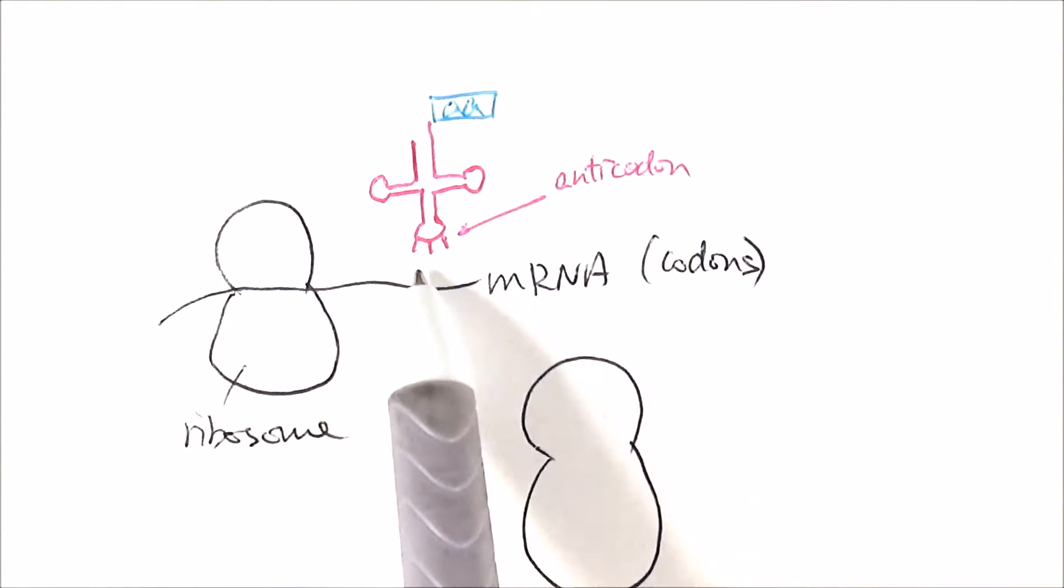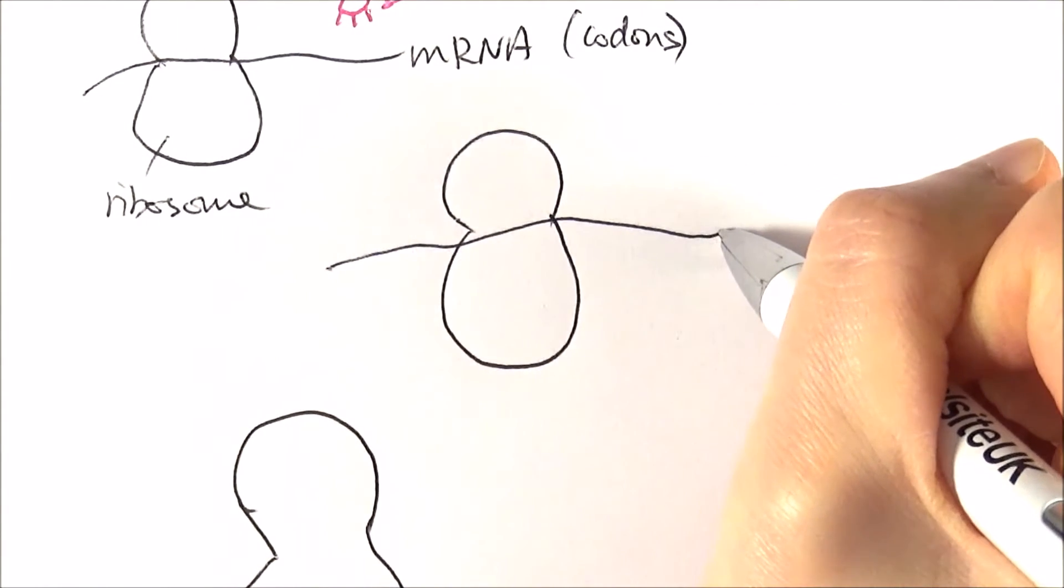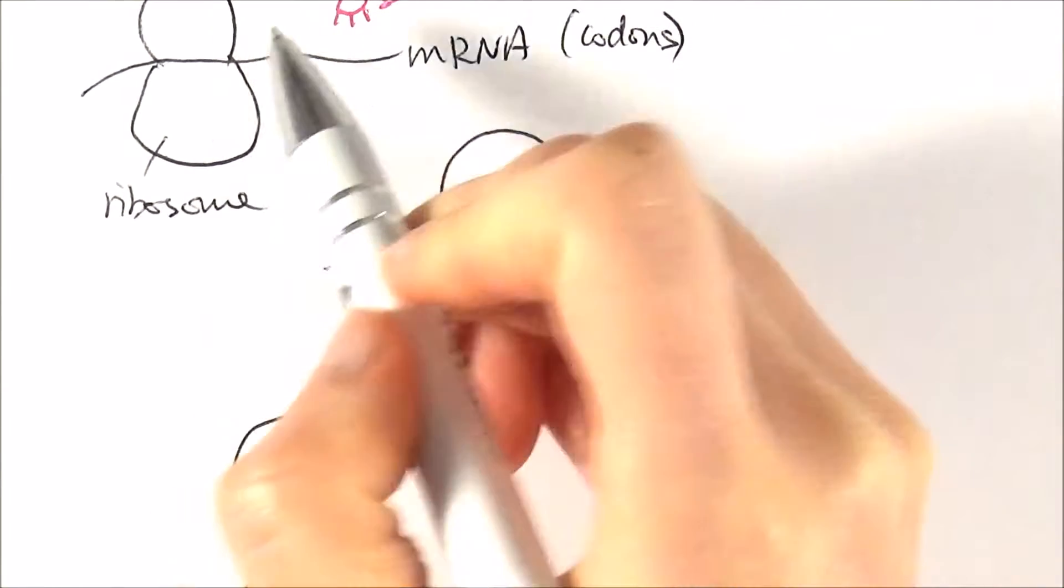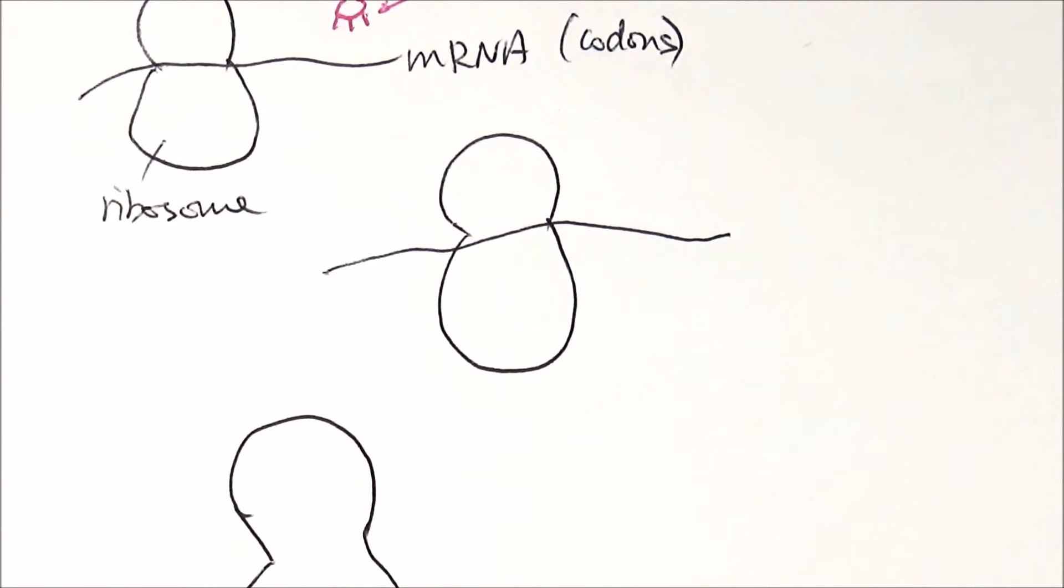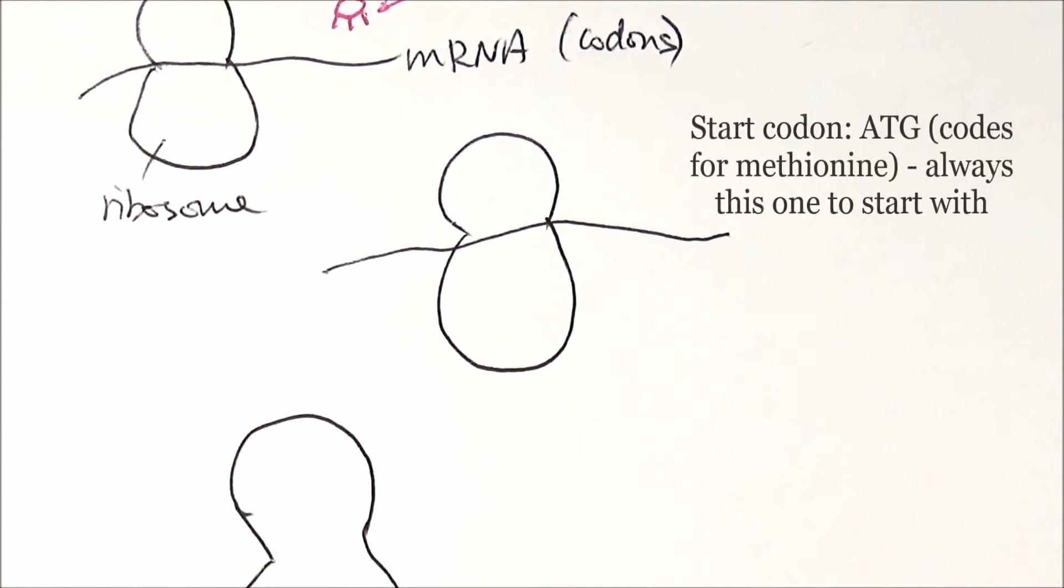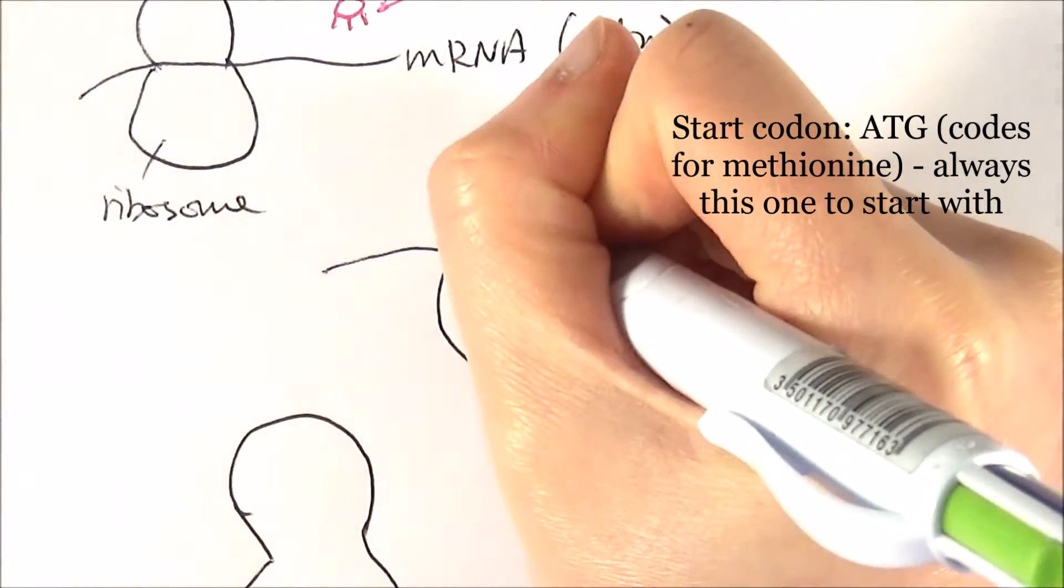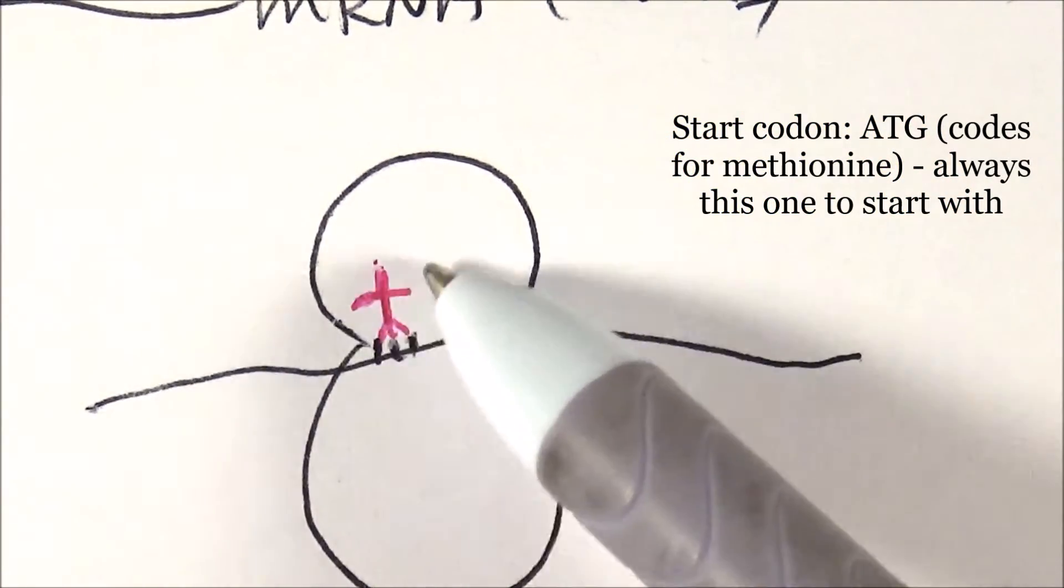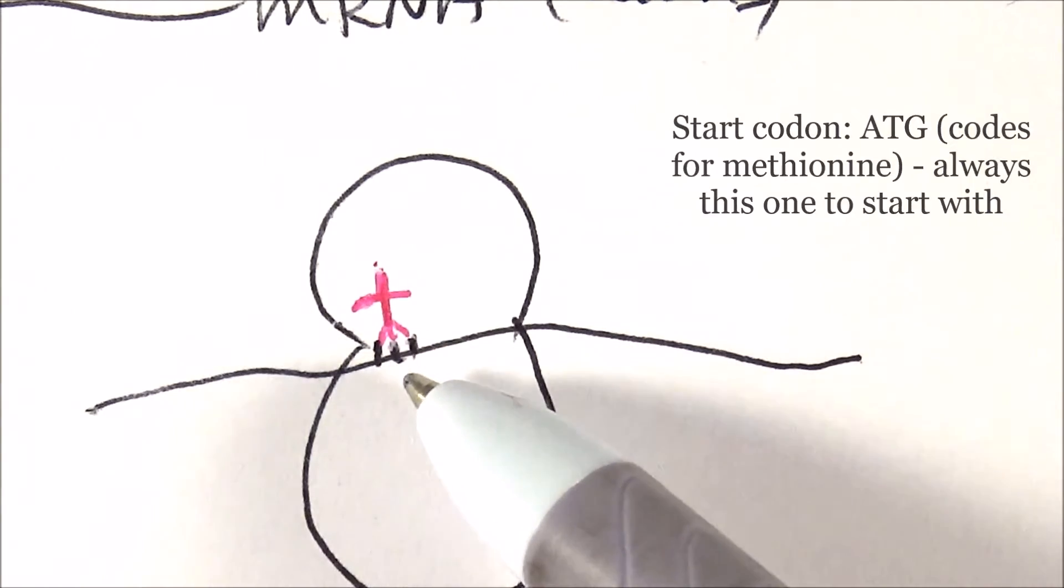That loop there is called the anticodon loop, which contains the anticodon. The first step is when the mRNA is attached to the ribosome. Then the tRNA binds to the start codon of mRNA. This tRNA carries the amino acid for the start codon, which is usually methionine.